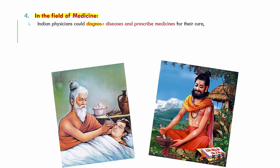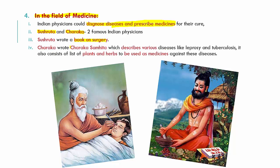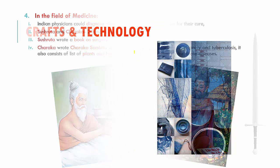In the field of medicine, ancient India made great progress. Indian physicians could diagnose diseases and prescribe medicines. Two famous physicians were Sushruta and Charaka. Sushruta wrote a book on surgery, while Charaka wrote the Charaka Samhita, which describes various diseases like leprosy and tuberculosis and lists plants and herbs that can be used as medicines against these diseases.